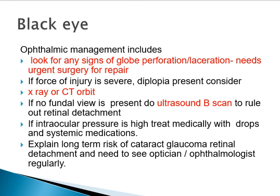When examining the eyes in a patient with black eyes, look for any signs of globe perforation or laceration — any obvious laceration will be easily seen. A very deep anterior chamber, abnormal pupil, or loss of vision can suggest globe perforation. If there is a perforation, it needs urgent surgery to prevent the risk of loss of vision as well as loss of the eye.